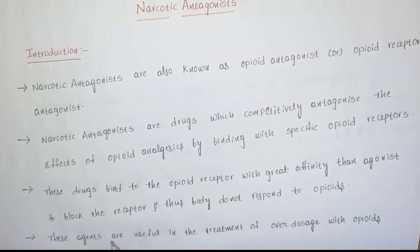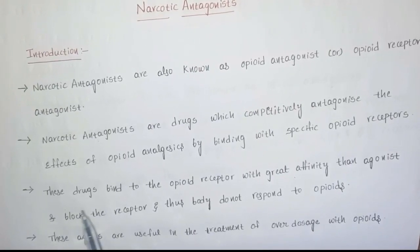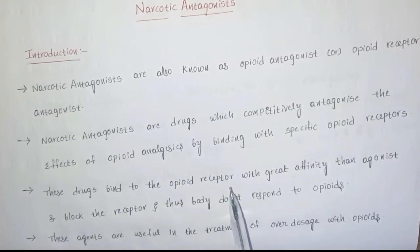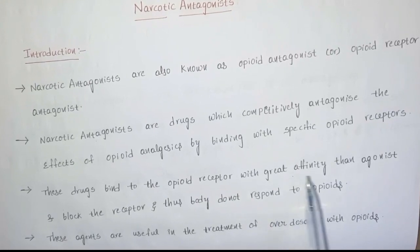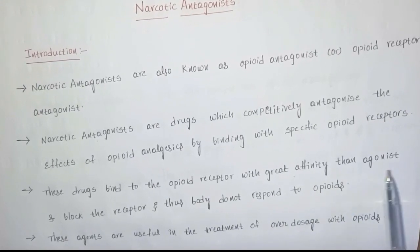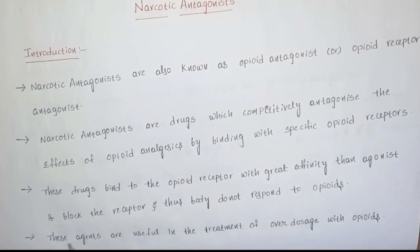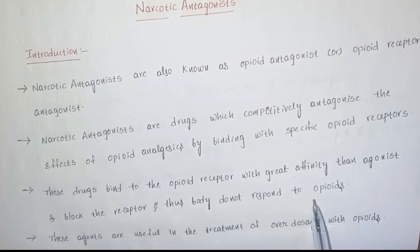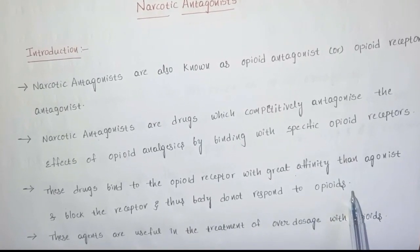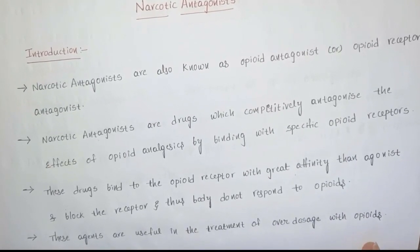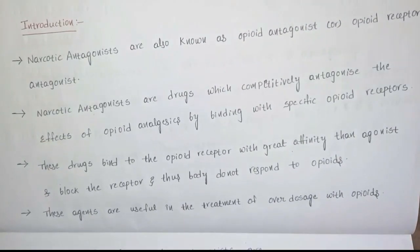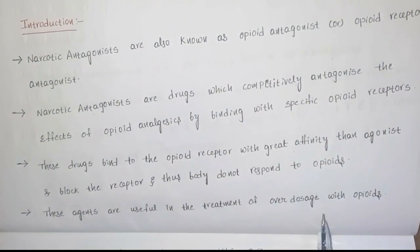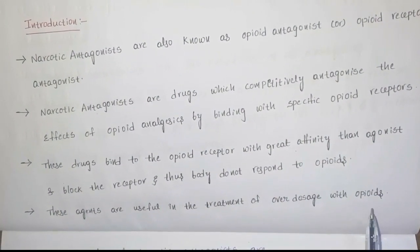Narcotic antagonists are the drugs which bind to opioid receptors with greater affinity than agonists and block the receptors, and thus the body does not respond to opioids. These agents are useful in the treatment of overdose with opioids.